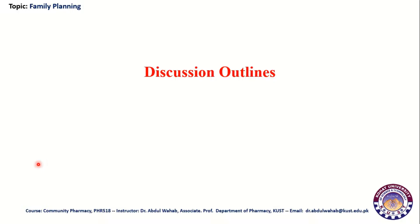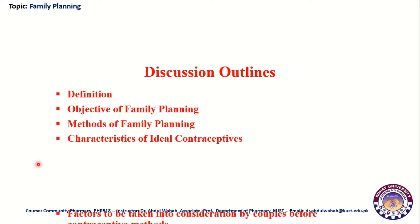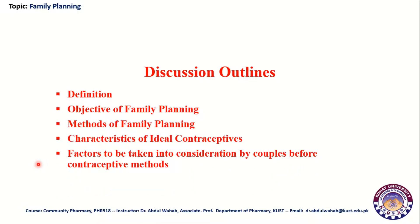In our discussion outlines, we will define family planning and we will also discuss the objectives of family planning, methods of family planning and characteristics of oral contraceptives, and factors to be taken into consideration by couples before contraceptive methods. These are our today's discussion outlines.